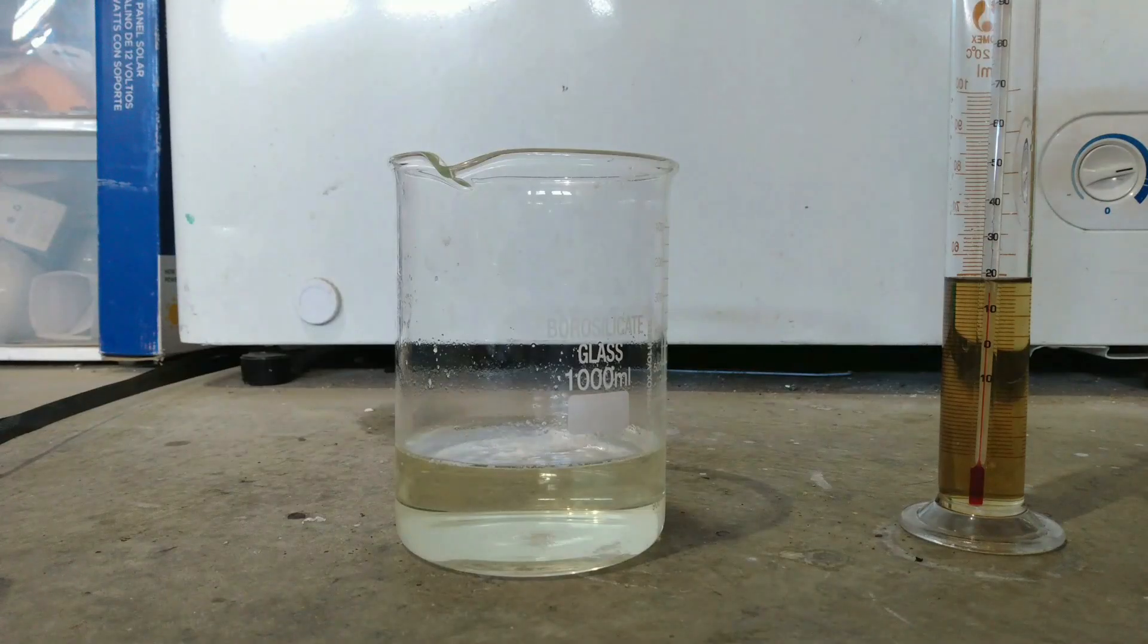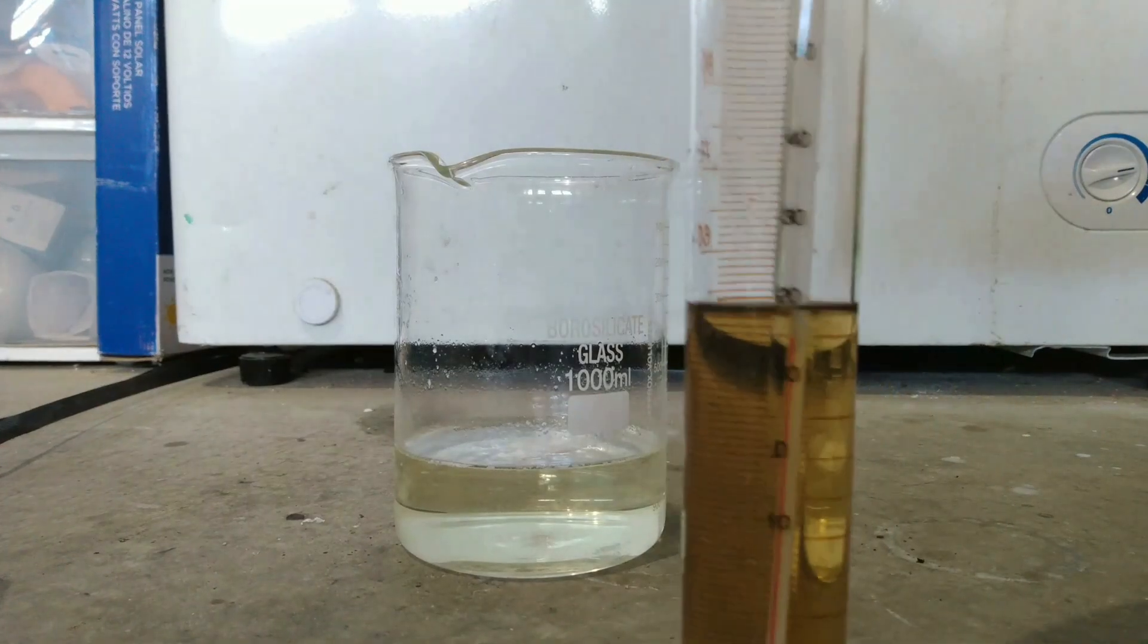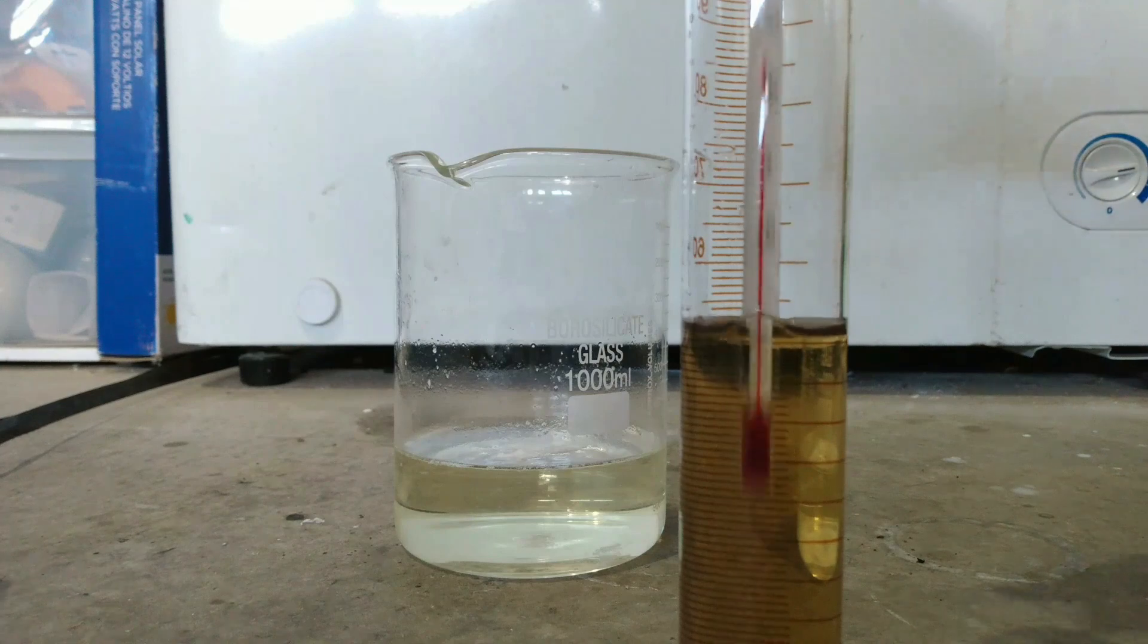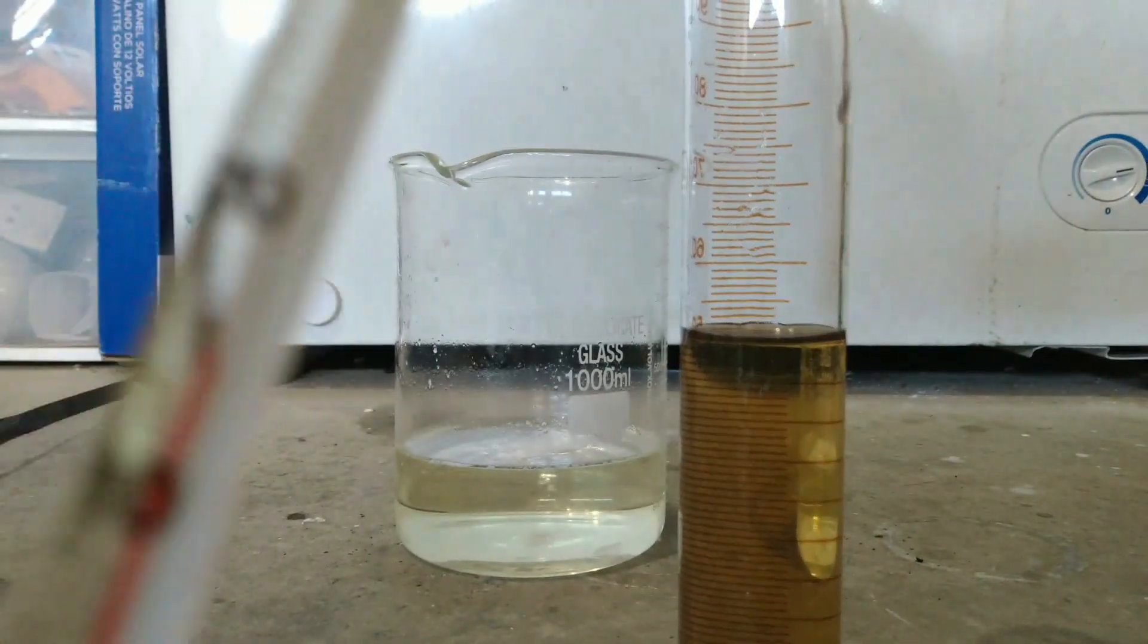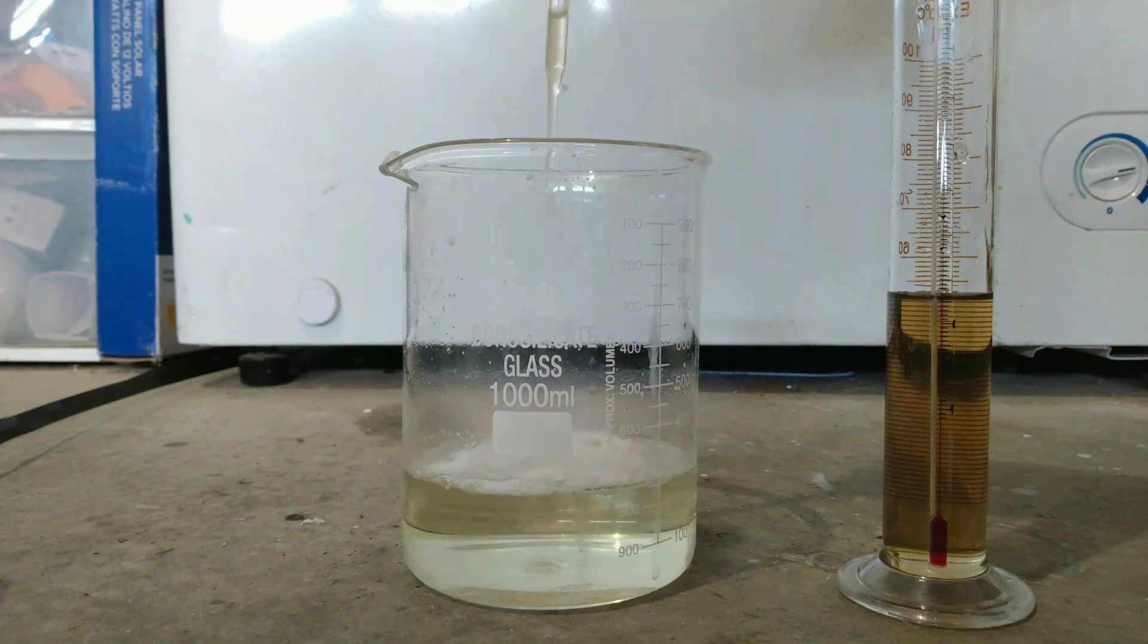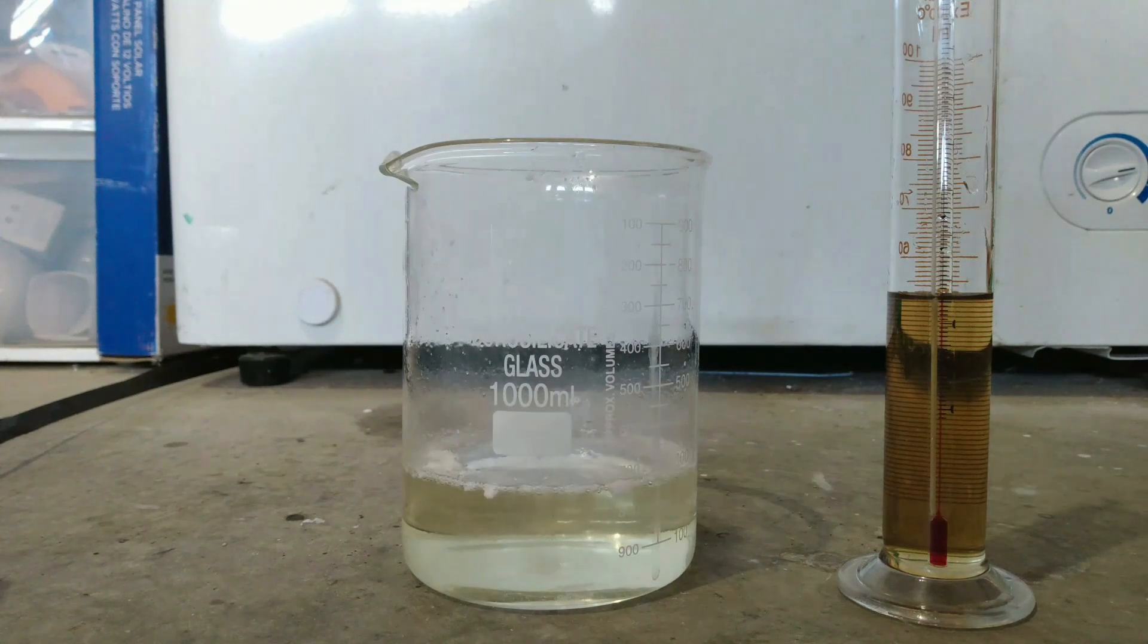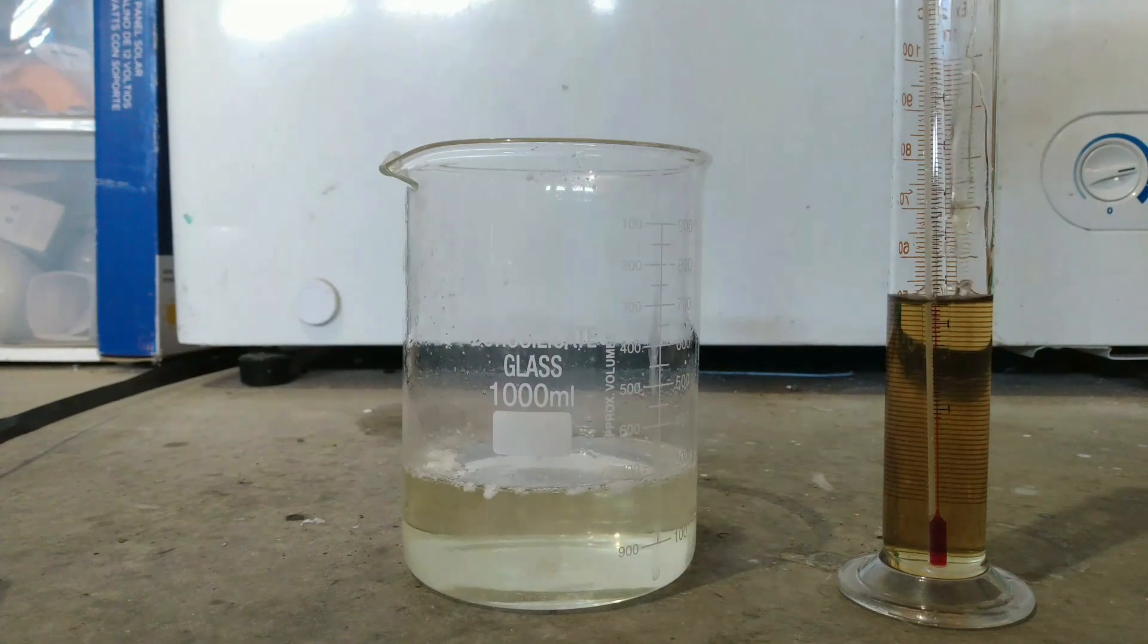After the solution clears up and cools down we add our 50% sulfuric acid solution. At first a large amount of bubbling occurs, but after you should see a white precipitate forming.